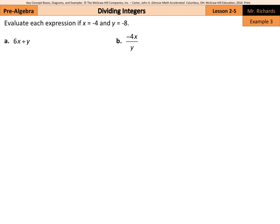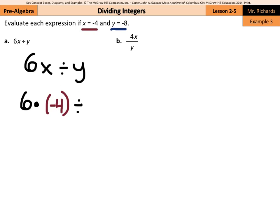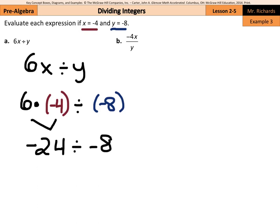In example 3, we're evaluating expressions with both positive and negative numbers, and with multiplication and division. For 6x divided by y, we substitute negative 4 for x and negative 8 for y, giving us 6 times negative 4, divided by negative 8. Well, 6 times negative 4: 6 times 4 is 24, and a positive times a negative is negative, so negative 24. Then dividing by negative 8: 24 divided by 8 is 3, and negative divided by negative is positive. So the answer is positive 3.